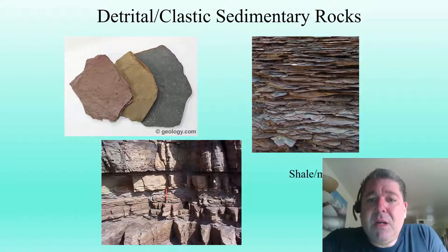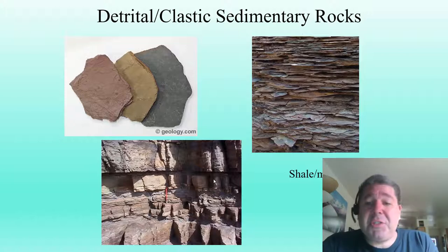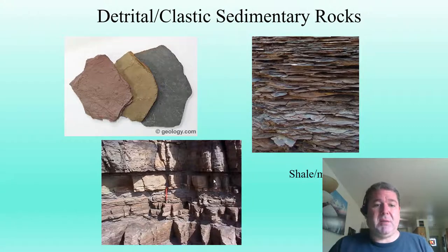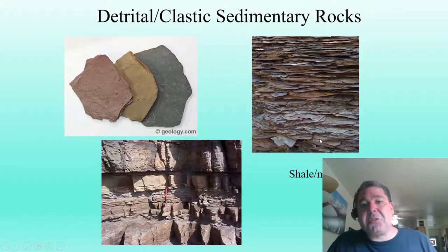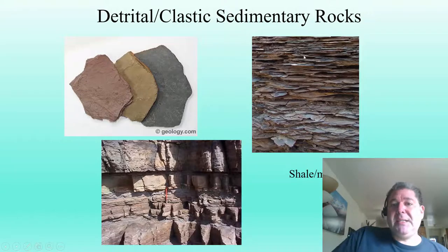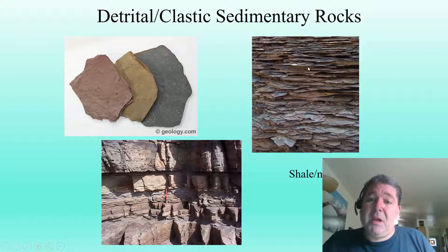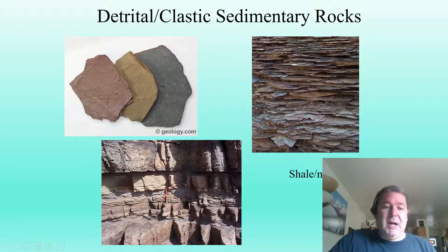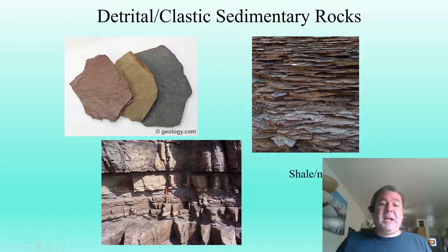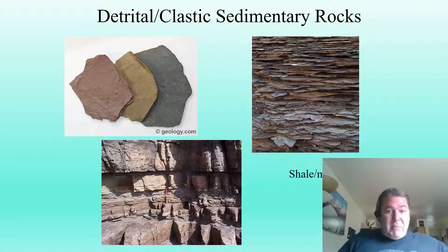The mud or clay-size fraction becomes shale or mudstone — again, interchangeable terms referring to the same grain size. Classically, geologists call the very fissile, pages-in-a-book-looking material shale, which generally accumulates in quiet waters like deep ocean, lagoon, or lake environments. Mudstone is the more blocky variety, occurring as overbank deposits when rivers flood over their banks and deposit mud in back swamps.